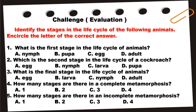Number two: Which is the second stage in the life cycle of the cockroach? A. Egg. B. Nymph. C. Larva. D. Pupa.